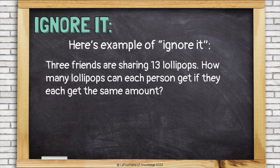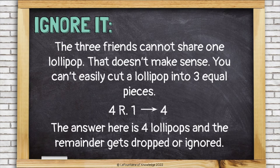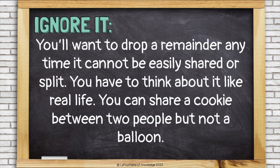3 friends are sharing 13 lollipops. How many lollipops can each person get if they each get the same amount? So we're dividing 13 divided by 3, which is 4 remainder 1. If we divide 13 lollipops between 3 friends, they can each have 4 lollipops with 1 left over. The 3 friends cannot share 1 lollipop — you can't easily cut a lollipop into 3 equal pieces. So the answer here is just 4 lollipops; the remainder gets dropped or ignored. Each friend can have 4 lollipops.